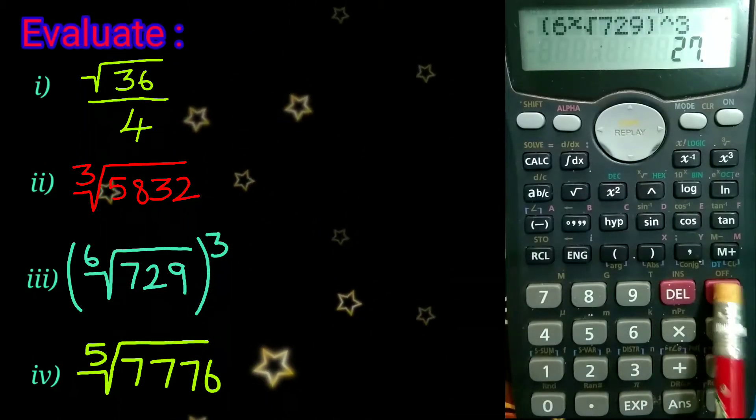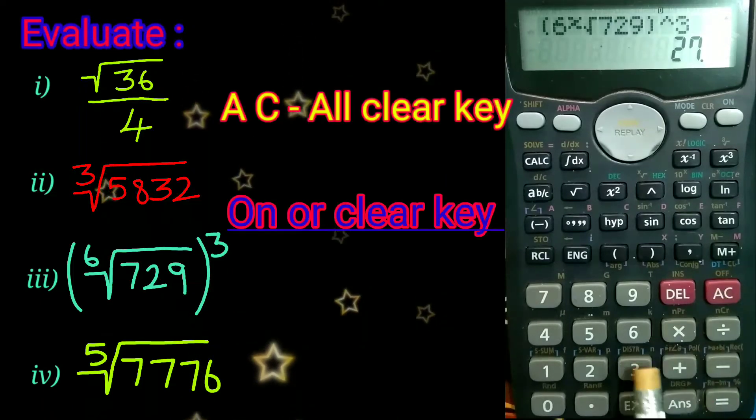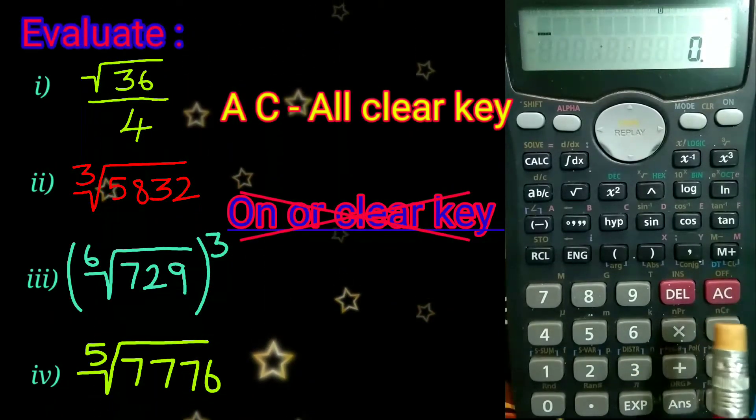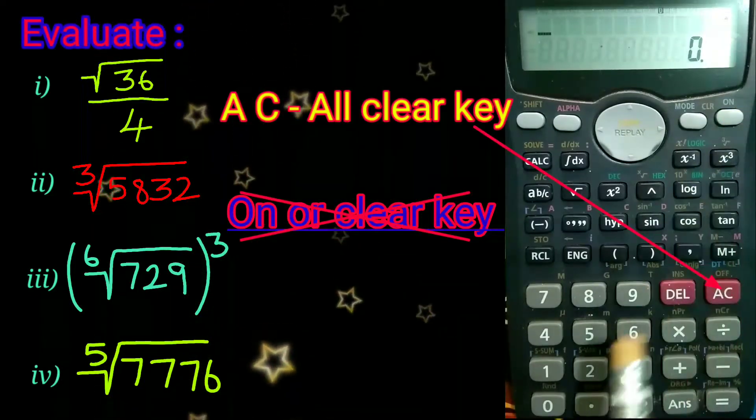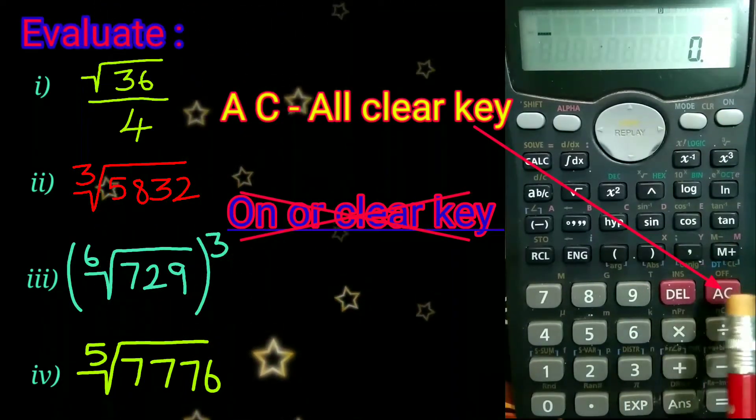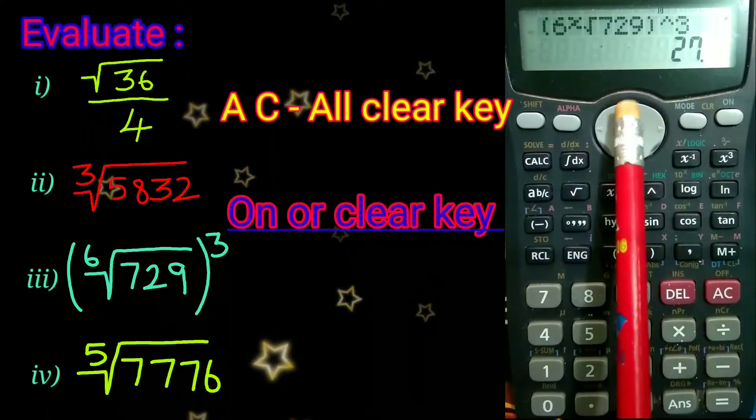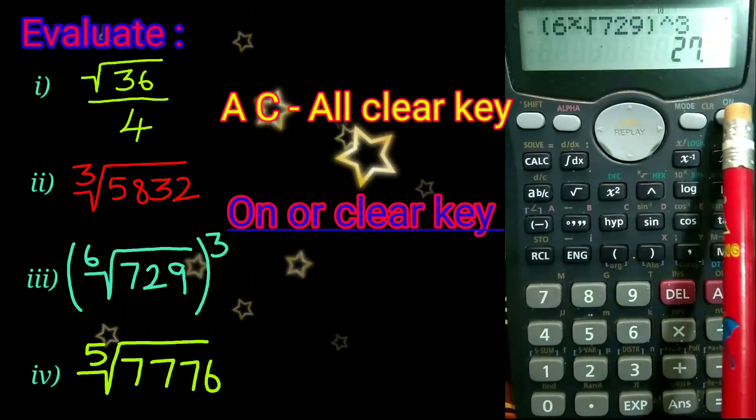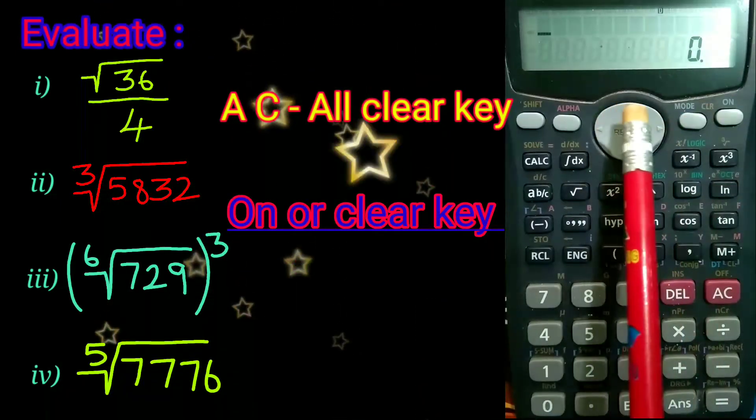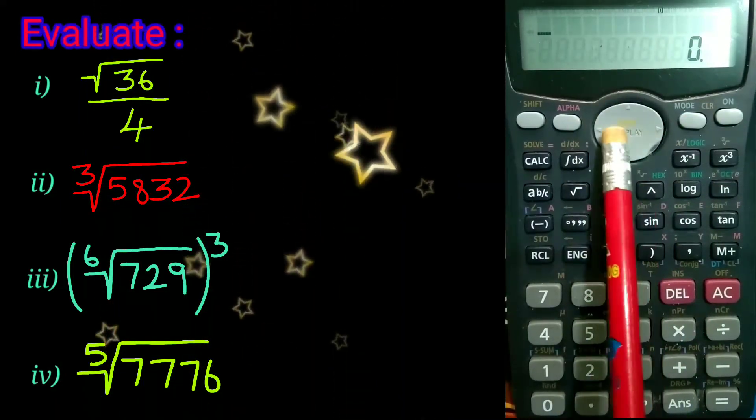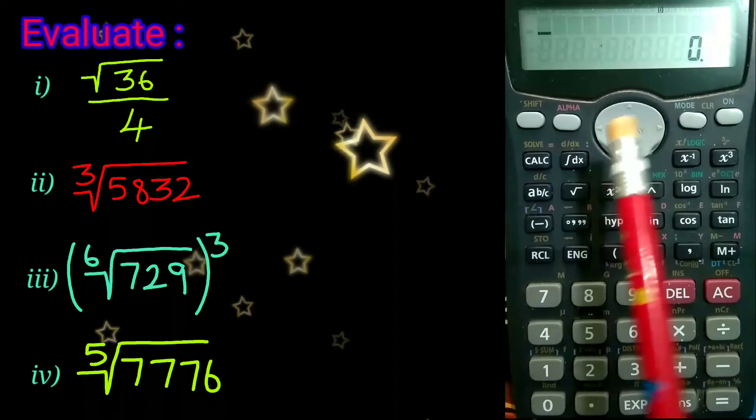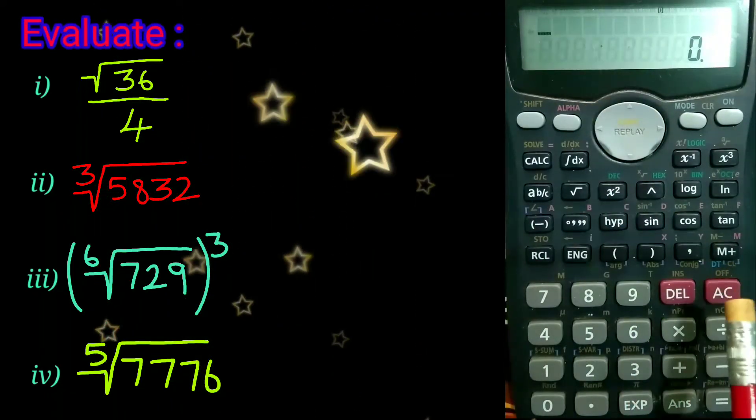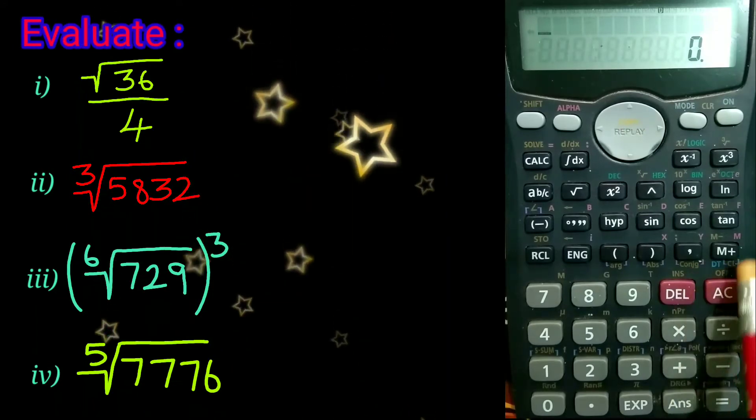Last but not least, a tip for you. Try to use the all clear key rather than the clear or on button. If you use all clear, you can replay or check the previous calculations. But if you're using the on key or clear, you won't be able to see the replay or previous calculation. So if you're proceeding with any calculation, use the all clear key.